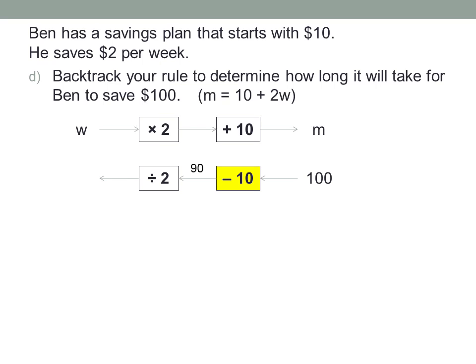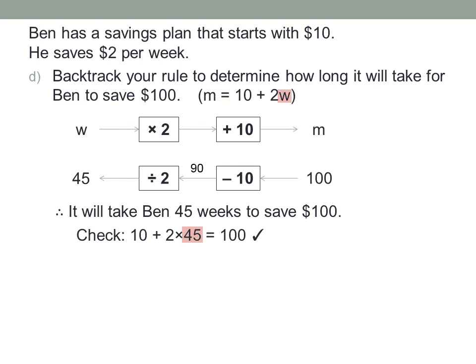A hundred minus ten is ninety, and ninety divided by two is forty-five. It is going to take Ben forty-five weeks to save one hundred dollars. Let's check that answer. Substitute forty-five weeks for W in the rule. Ten plus two lots of forty-five is ten plus ninety, which is a hundred. Good.